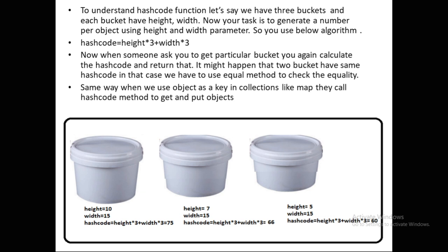To understand the hashCode function with a real-world example, let's say we have three buckets and each bucket has a height and a width. Your task is to generate a unique number per object using those parameters. You use the formula: hashCode = height * 3 + width * 3. Now when someone asks you to retrieve a particular bucket, you calculate the hash code and return it.